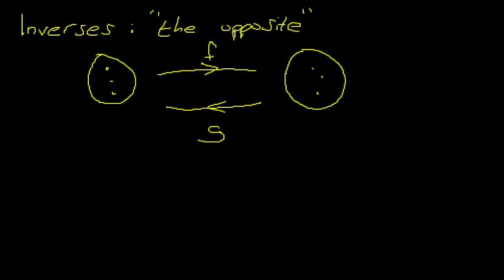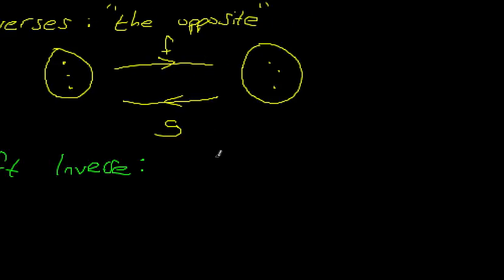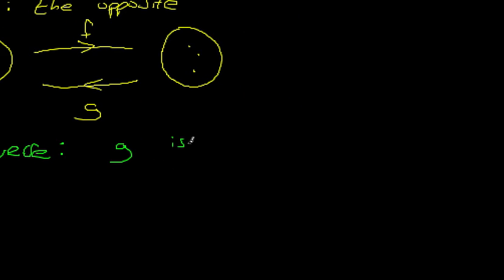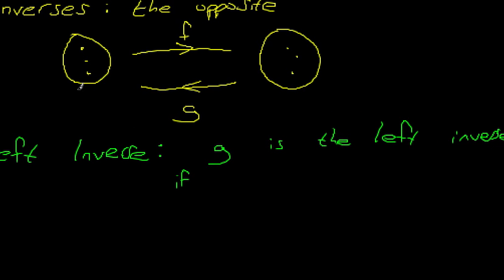Let's define the left inverse. The left inverse is defined like this. The domain we're going to call X, and the range we're going to call Y, so we use capital letters to denote sets, and little letters to denote elements of sets.